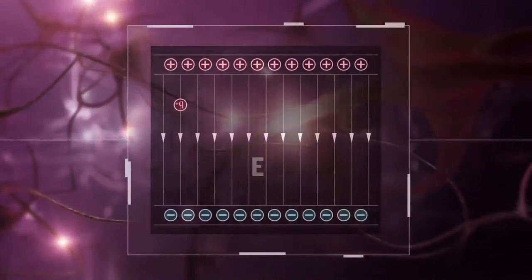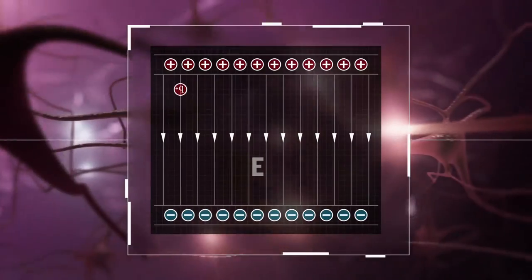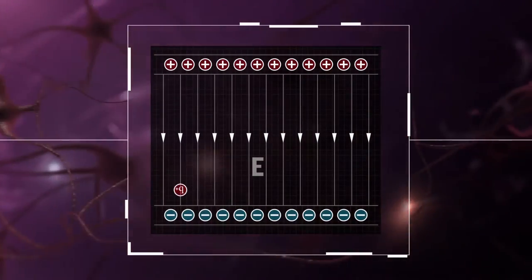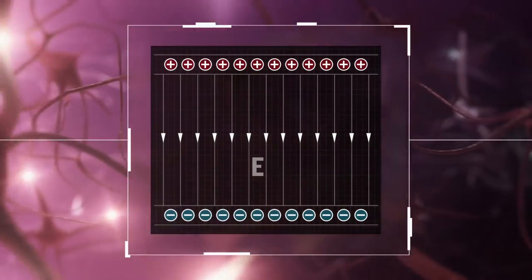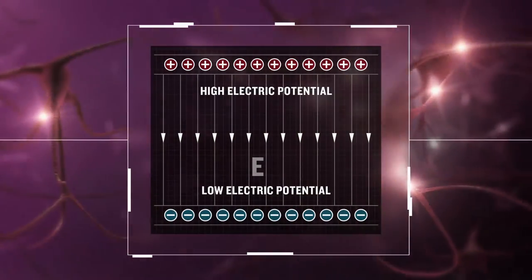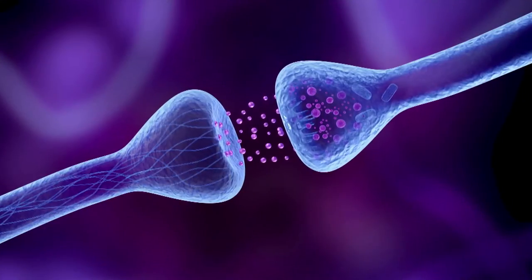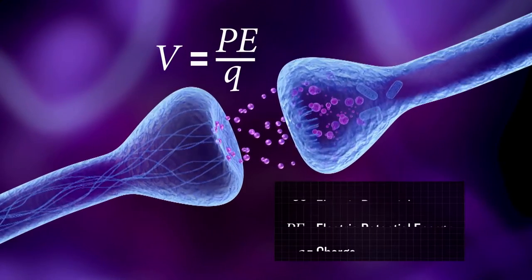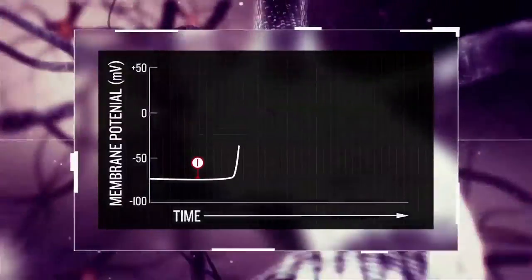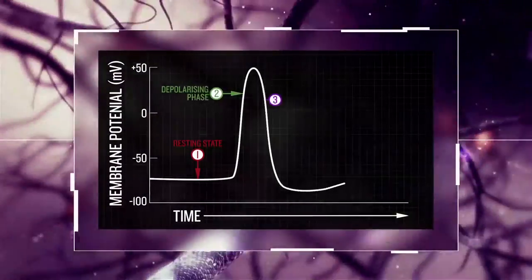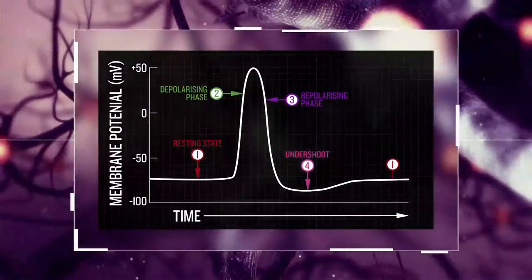Similar to how an object has gravitational potential energy due to its location in a gravitational field, a charged particle possesses electric potential energy by virtue of its location in an electric field. Electric potential is the electric potential energy per unit of charge, often referred to as voltage. Charged ions are constantly being separated, setting up electric potentials that can be measured.